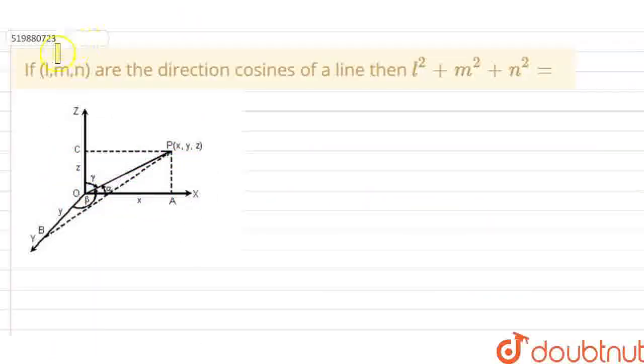Hello friends! In this question, if l, m, n are the direction cosines of a line, then l² plus m² plus n² equals what?